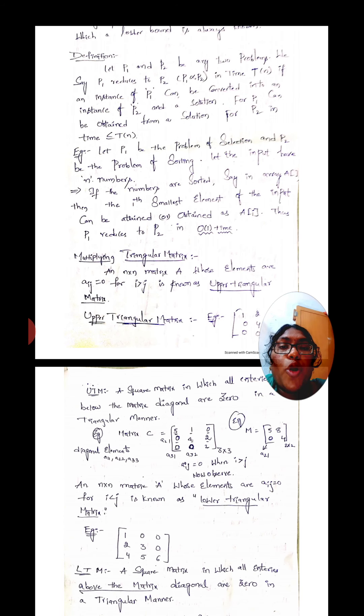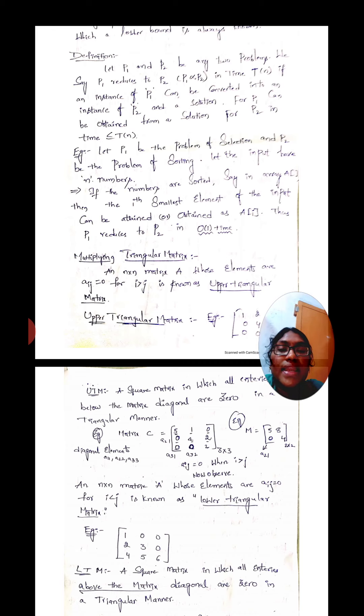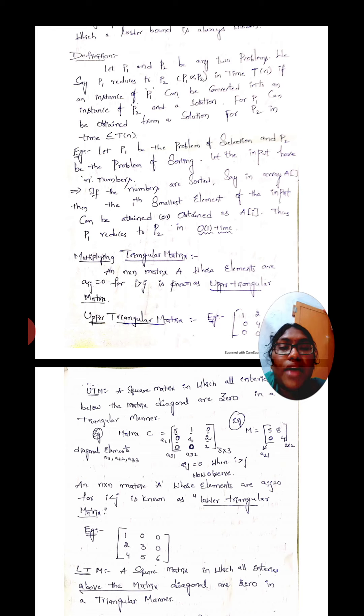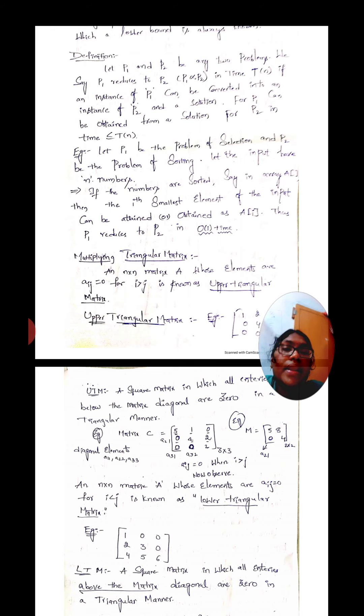Let P1 be the problem of selection and P2 be the problem of sorting. Let the input have N numbers — for example: 2, 5, 16, 1, 7, 6, 5, 3, 1. That is the array of N numbers. Let we have to take the input of N numbers.